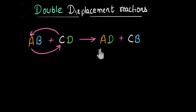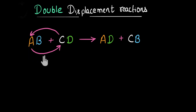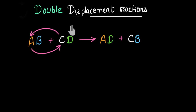Now you can see why this is called a double displacement reaction. Because in a way, we can say that A is displacing C and C is in turn displacing A. And since there are two displacements, we can call it a double displacement reaction.